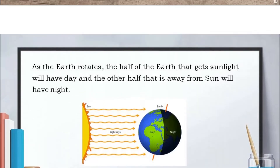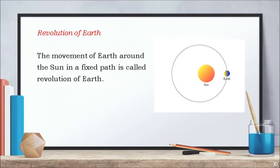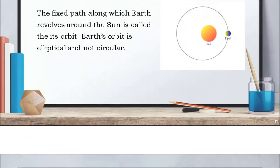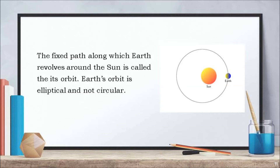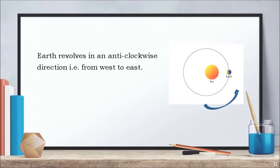Now let us see the second type of movement of earth. The movement of earth around the sun in a fixed path is called revolution of earth. This fixed path along which earth revolves around the sun is called its orbit. Earth's orbit is elliptical and it is not circular. Earth revolves around the sun in an anti-clockwise direction, that is, it rotates from west to east around the sun. So what we have learnt is that the revolution as well as rotation of earth is from west to east.